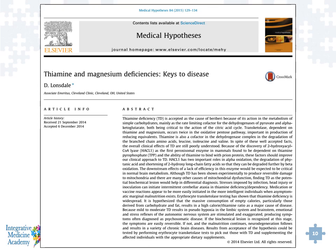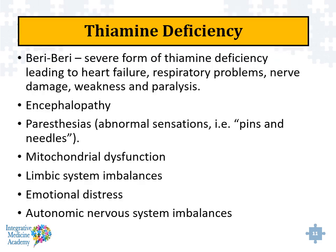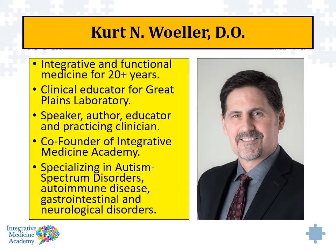Dr. Lonsdale has been a researcher into thiamine deficiencies and magnesium deficiencies as a link to various types of diseases. Thiamine deficiency is well known in a condition called beriberi — a severe form that can lead to heart failure, paralysis, and respiratory problems. We can get encephalopathy, paresthesias, abnormal sensations like pins and needles. It can affect mitochondrial activity, the limbic system for emotional control, and even cause autonomic nervous system imbalances affecting the sympathetic and parasympathetic nervous system. Thiamine supplementation is often not evaluated effectively and can have significant impact on people with brain and neurological problems, mental health, as well as autism.